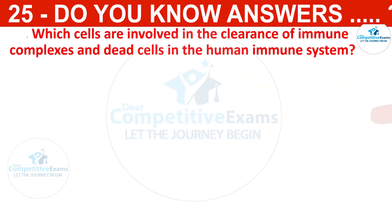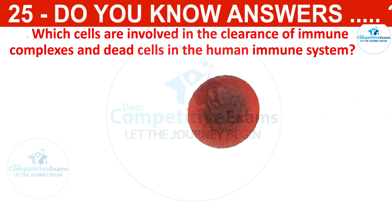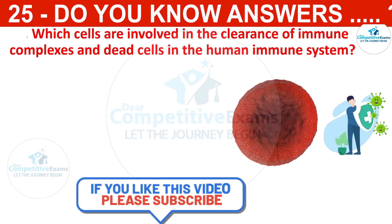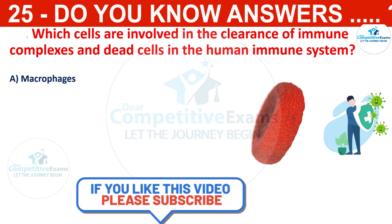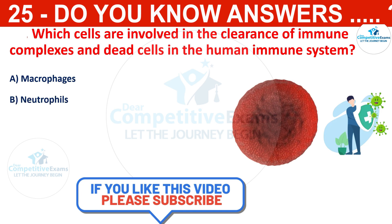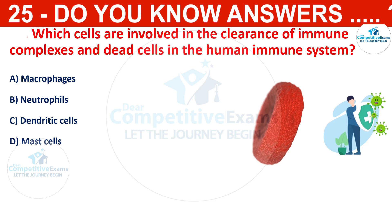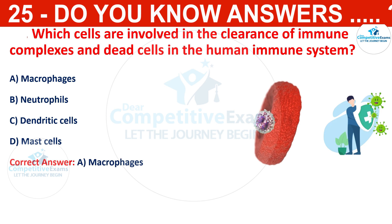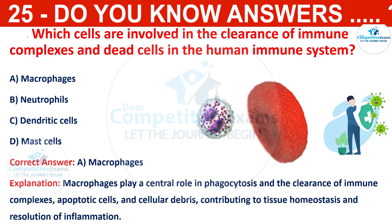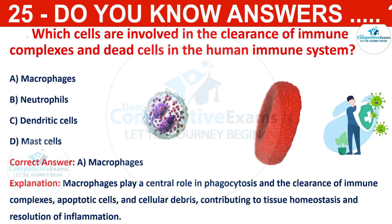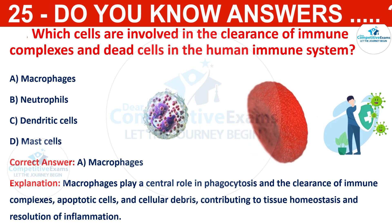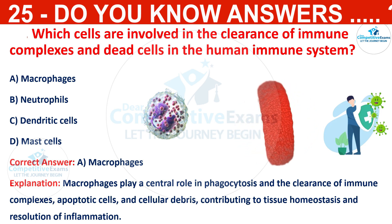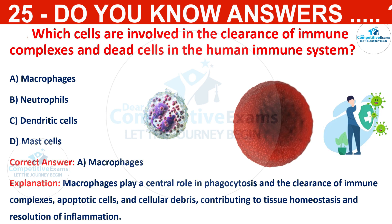Which cells are involved in the clearance of immune complexes and dead cells in the human immune system? The options are macrophages, neutrophils, dendritic cells, or mast cells. The correct answer is macrophages. Macrophages play a central role in phagocytosis and the clearance of immune complexes, apoptotic cells, and cellular debris, contributing to tissue homeostasis and resolution of inflammation.